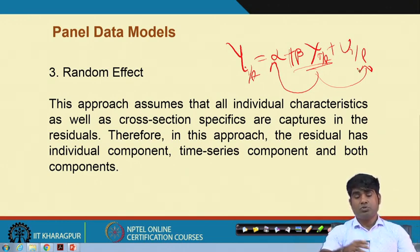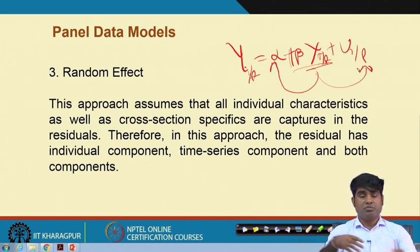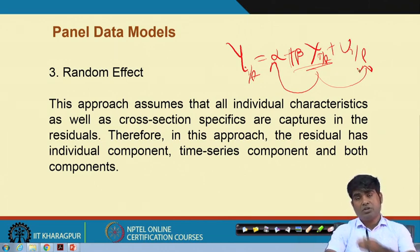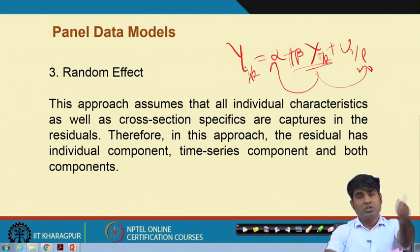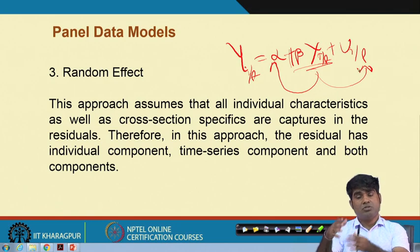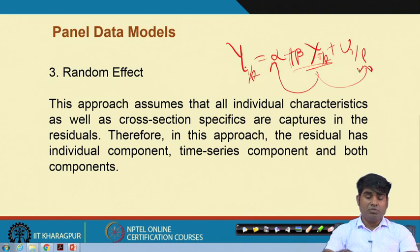In any case, the impact will either be through the intercept or through the error terms. The fixed effect model captures the impact of cross-sectional and time series units in the intercept, and the random effect model captures the impact of cross-sectional units and time series units in the error term.